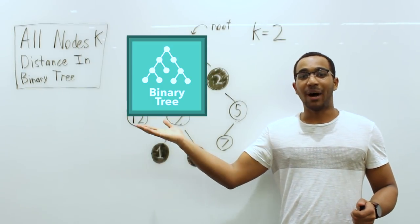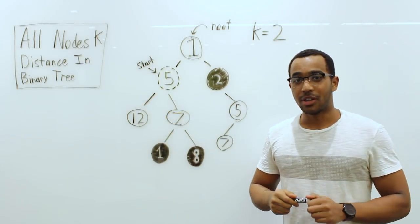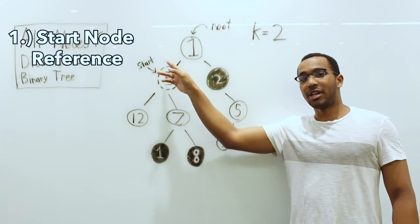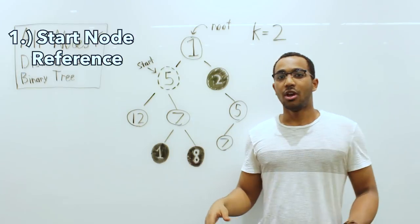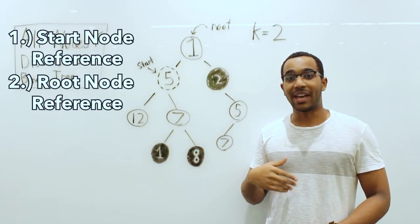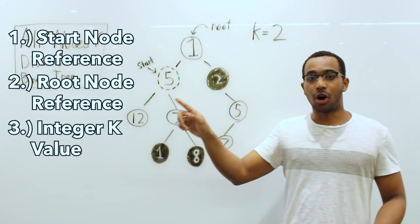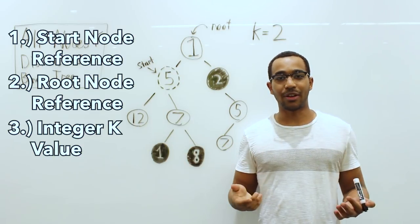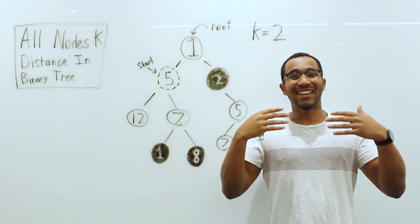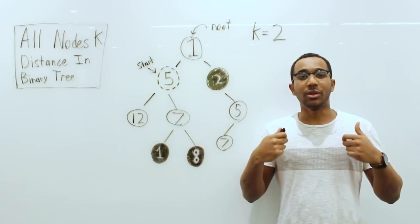So what we have today is a binary tree problem, and the problem is 'All Nodes K Distance in a Binary Tree.' We're given three things: a start node, the root of the tree, and an integer value called K. What this problem asks of us is, given K, return all of the nodes that are K distance away from the start node in this binary tree.